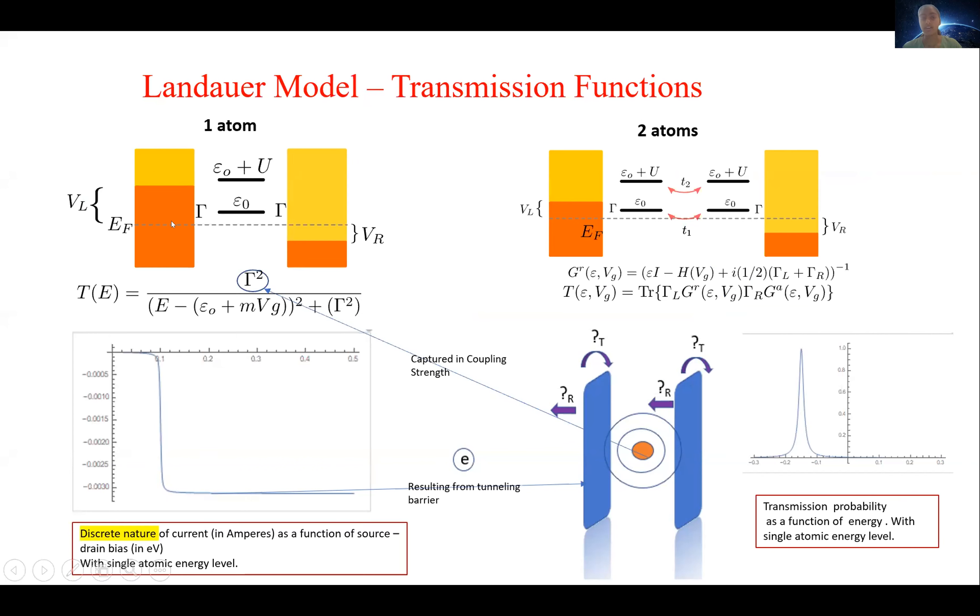So here is the picture of the one atom and the two atom system, and the rectangles correlate to the source and drain electrodes. As an electron is tunneling from the source electrode into the atom, it encounters a potential barrier and has some probability of being transmitted through this barrier and another of being reflected.